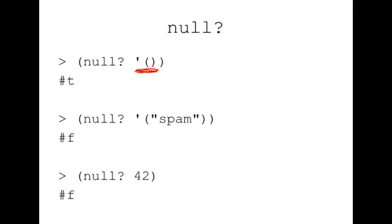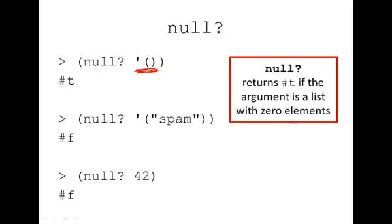Null that's called on a list that has an element inside of it will return pound F or false. Similarly, if null is called on something other than a list, it'll return false. So again, null returns pound T if the argument is a list with zero elements.